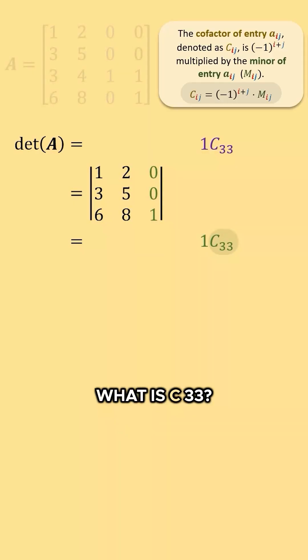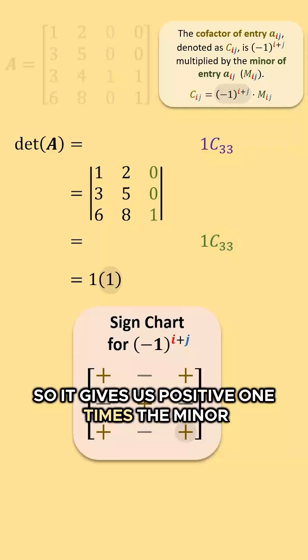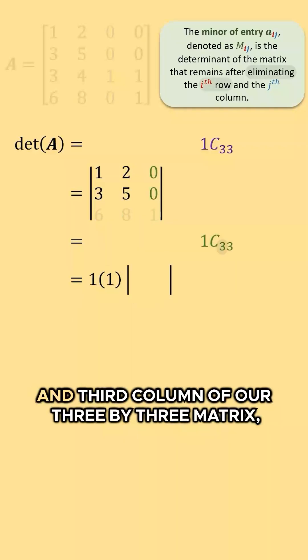What is C33? Well, it's the sign we get from the sign chart, so it gives us positive 1 times the minor we get when we eliminate the third row and third column of our 3x3 matrix.